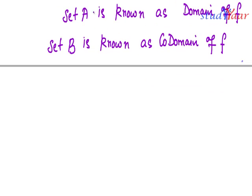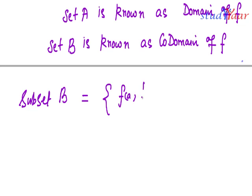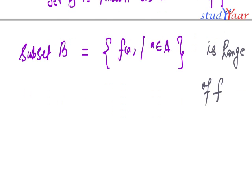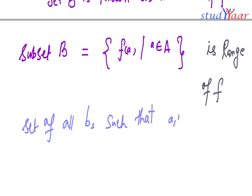The range of f is a subset of B, which is equal to f of a, where a belongs to A. We are talking about the set of all b's such that (a, b) is an element of f. This set of all b's is known as the range of f.